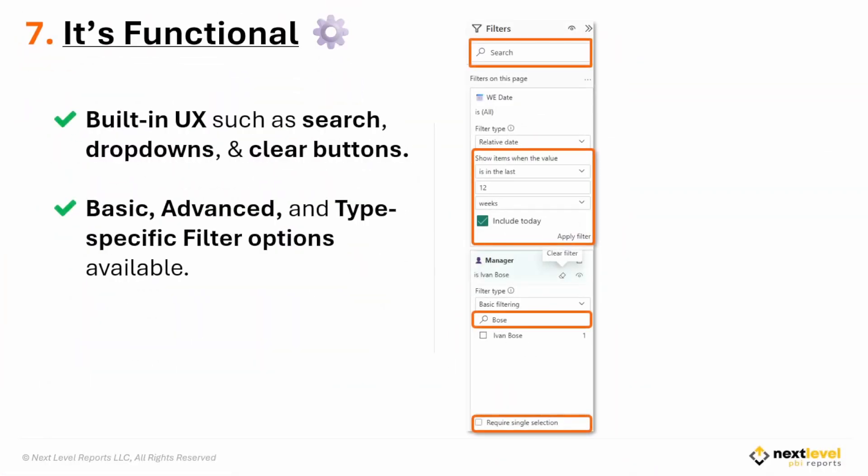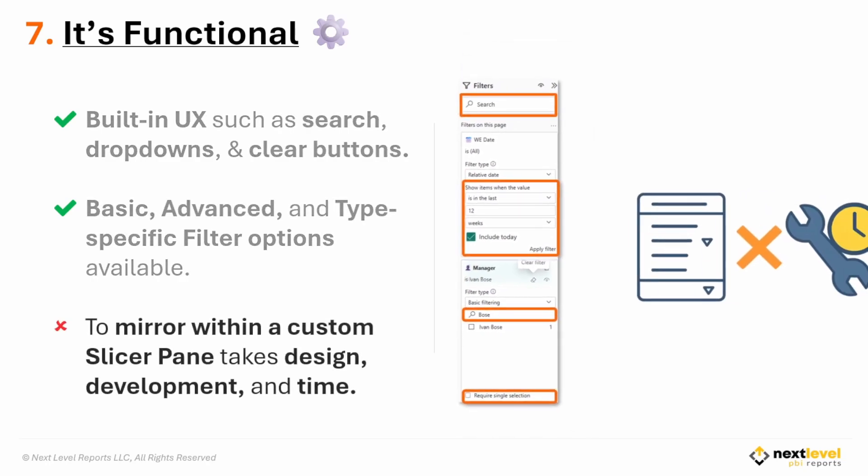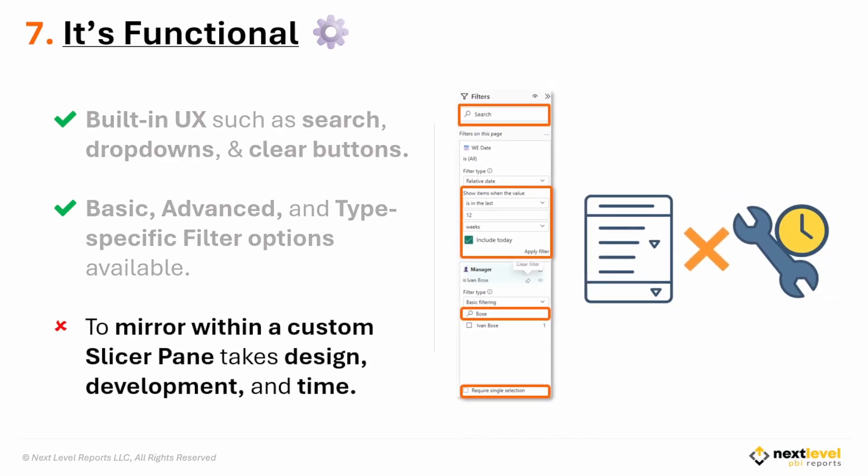Reason number seven: built-in functional features. The filter pane comes packed with useful UX features right out of the box. Your users can search text fields, use drop-downs, or switch to advanced searches. They can expand, collapse, drill into, or clear single filters. Replicating these features with custom slicers requires significantly more design and development work, which all takes more time to do.